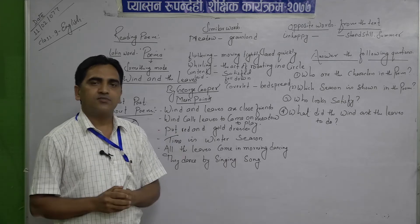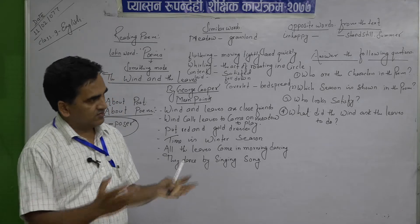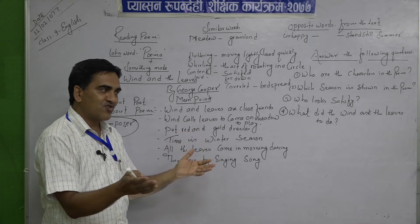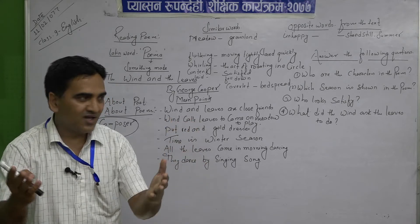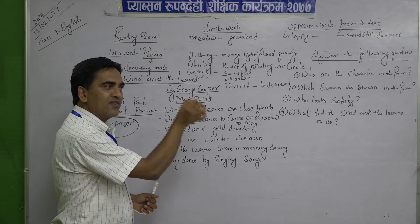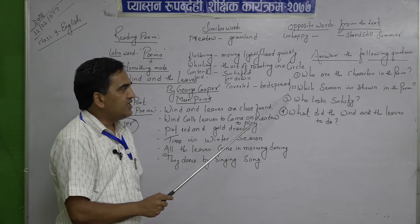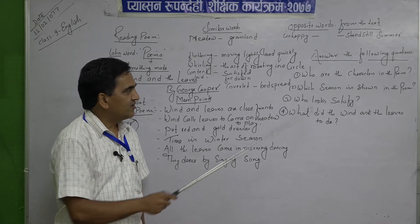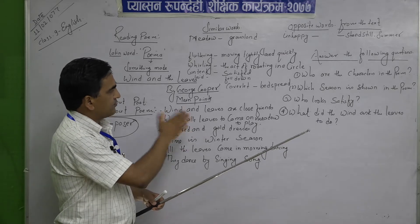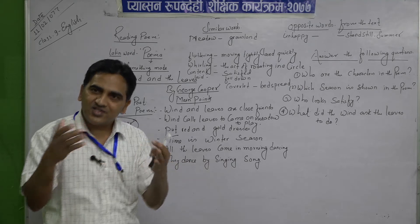Who are the characters in the poem? You do not find characters like George, Michael, or Tom. The characters are lifeless — just like wind and leaves. They are playing like characters in the poem. The characters in the poem are wind and the leaves. Which season is shown in the poem? Winter season. Who looks satisfied? Both wind and leaves are satisfied after playing, and they are singing a song.